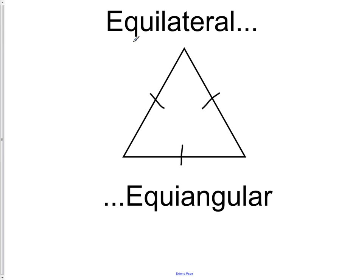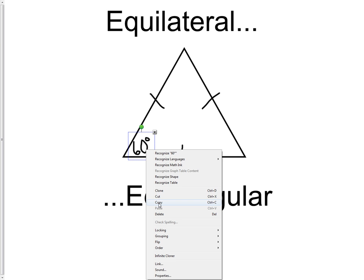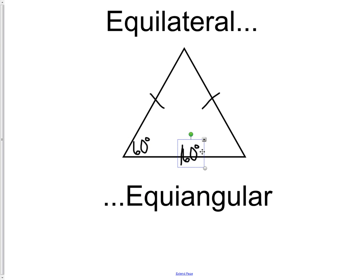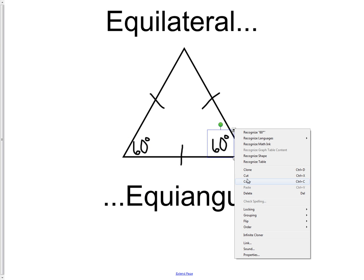And also remember that our equilateral triangle is also equiangular. And the angles of an equilateral triangle will always be 60 degrees. All three angles will have the exact same measurement. All three of them will be 60 degrees.